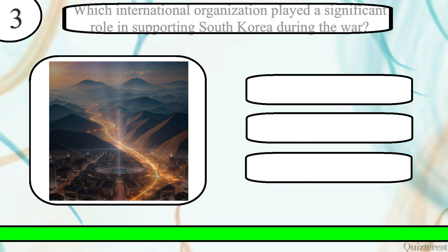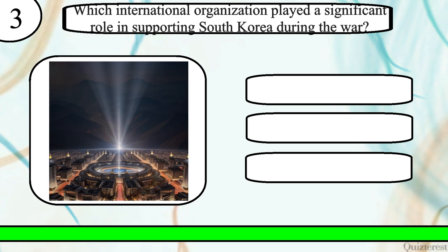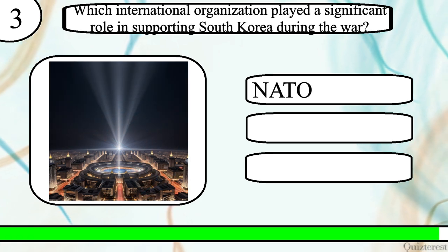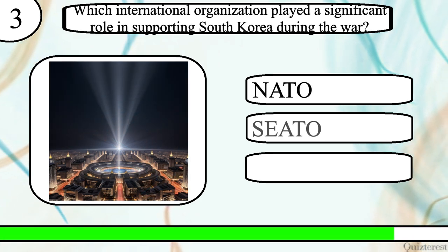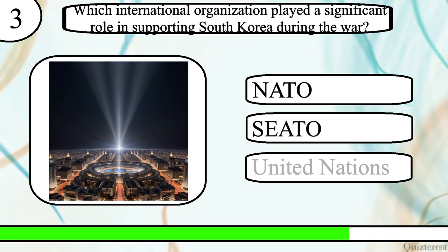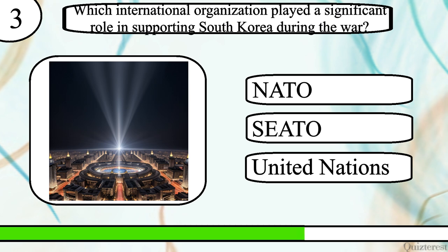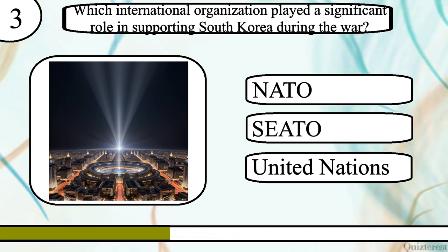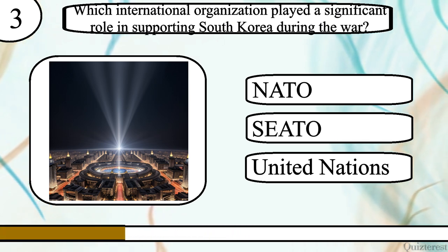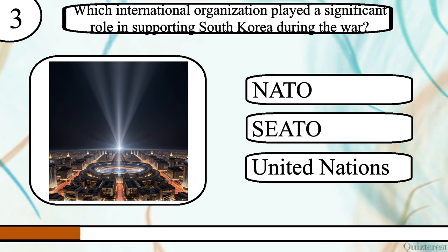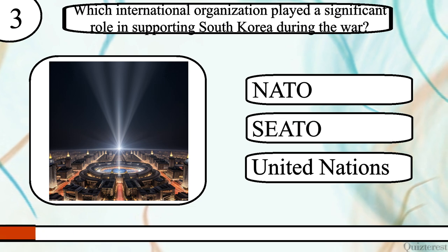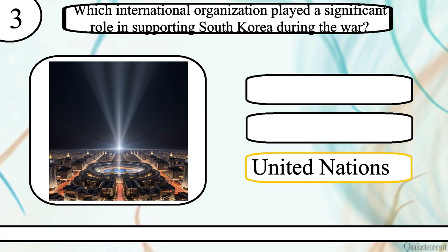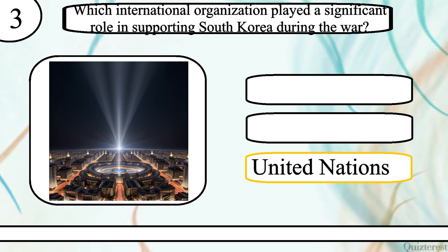Question 3. Which international organisation played a significant role in supporting South Korea during the war? NATO, Seattle, or United Nations? The correct answer is United Nations.